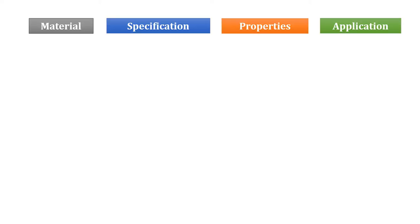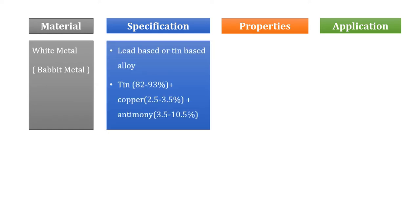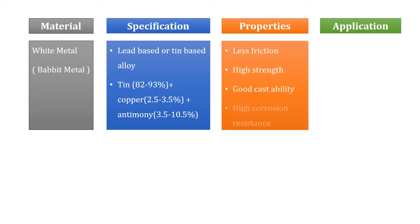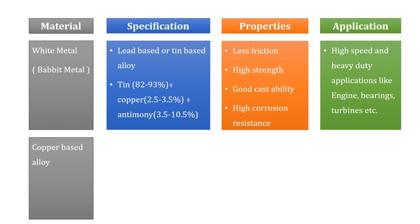The common bearing materials are of mainly three types. The first is white metal, also known as Babbitt metal, which is a lead-based or tin-based alloy. Tin is present from 82 to 93 percent, copper 2.5 to 3.5 percent, and antimony 3.5 to 10.5 percent. Babbitt metals have properties of less friction, high strength, good castability, and high corrosion resistance. Because of these properties it is used in high speed and heavy duty applications like engine bearings and turbines.